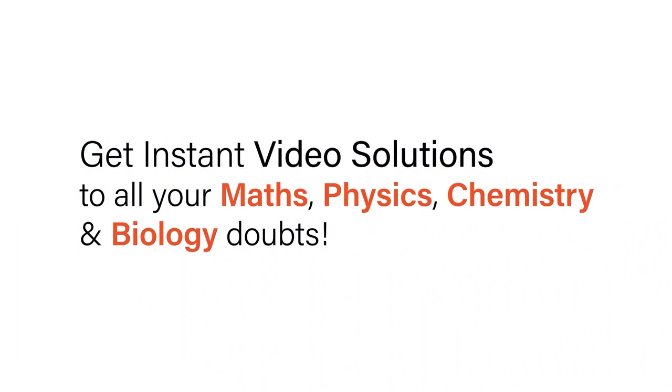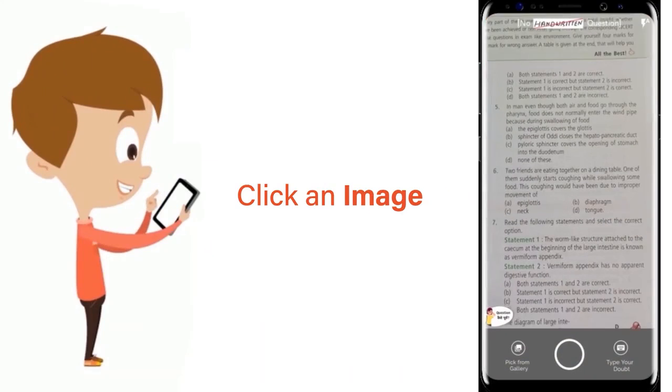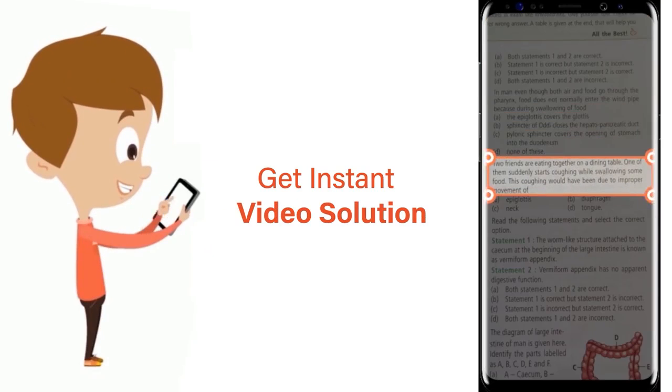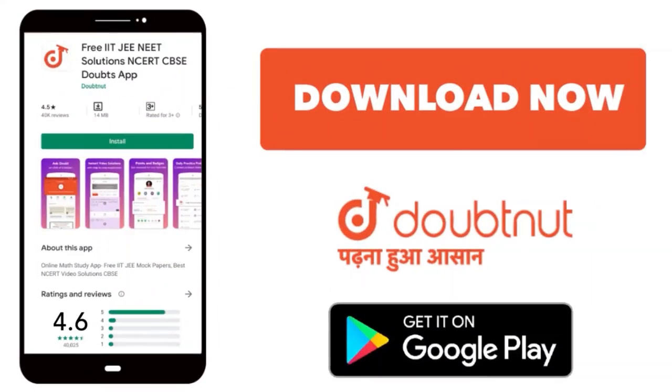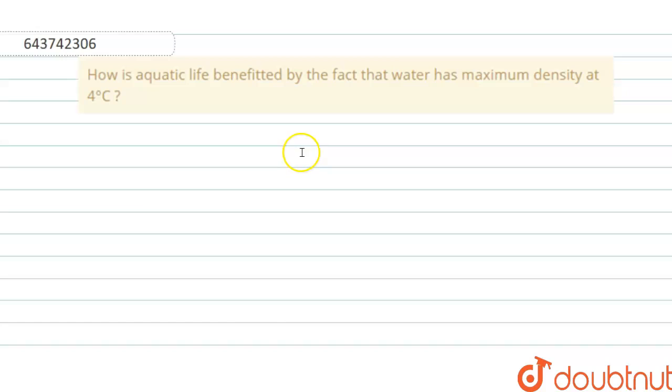With Doubtnet, get instant video solutions to all your math, physics, chemistry and biology doubts. Just click the image of the question, crop the question, and get instant video solution. Download Doubtnet app today. Hello everyone, we have this question: How is aquatic life benefited by the fact that water has maximum density at 4°C?